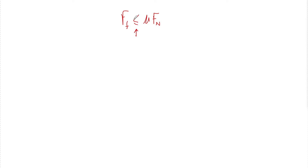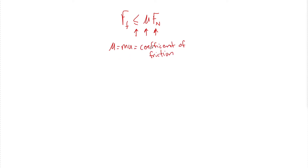I'll explain why this is a less-than-or-equal sign in just a second. First, let's talk about the different parts: mu and F_N. Mu is a lowercase Greek letter, and it's also called the coefficient of friction. What does mu really mean? If you look it up in a book, it's the ratio of the force of friction to the force of the normal — if I divide both sides by F_N, I get mu. It has no unit because it's a ratio, which is great because you don't have to worry about remembering a unit.